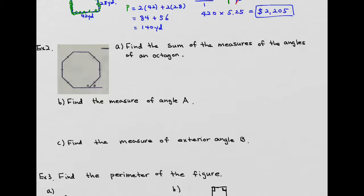In order to find the sum of the measures, we have a formula. Your formula will be n minus 2 times 180. Your n is going to be the number of sides. So this octagon, we have eight sides.